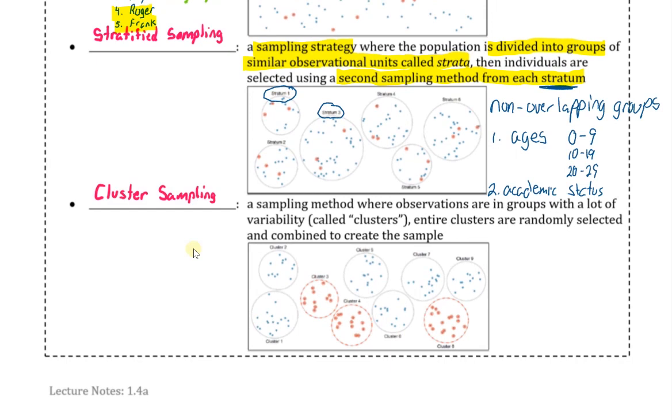We will also talk about cluster sampling. Cluster sampling is a sampling method where observational units are in groups with a lot of variability inside them. These are called your clusters. Entire clusters are then randomly selected and combined to create a sample. One type of cluster might be, for example, if you have a campus, let's say our SLCC campus, and maybe you have several buildings. You have the AAB building, the LAC building, the SI building. So each building might be considered a cluster. And then if we were doing cluster sampling, we would randomly select which clusters to include in our sample.